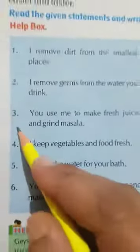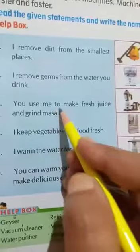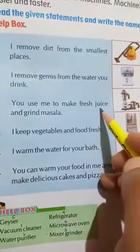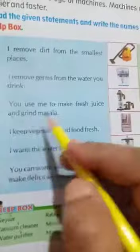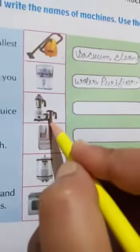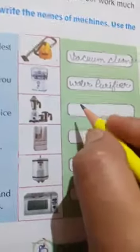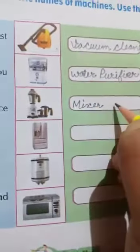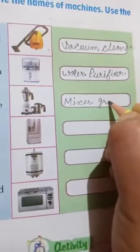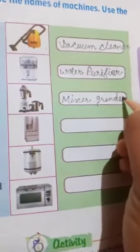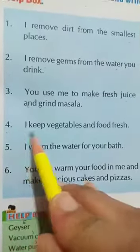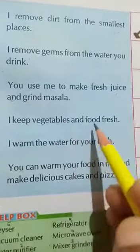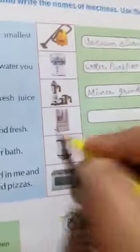Now come to our next statement. Number 3: You use me to make fresh juice and grind masala. Look at this picture. Which picture is this? This is mixer grinder. You will write here: M-I-X-E-R G-R-I-N-D-E-R. Now come to our next statement. Number 4: I keep vegetables and food fresh. Look at this picture. This is refrigerator.